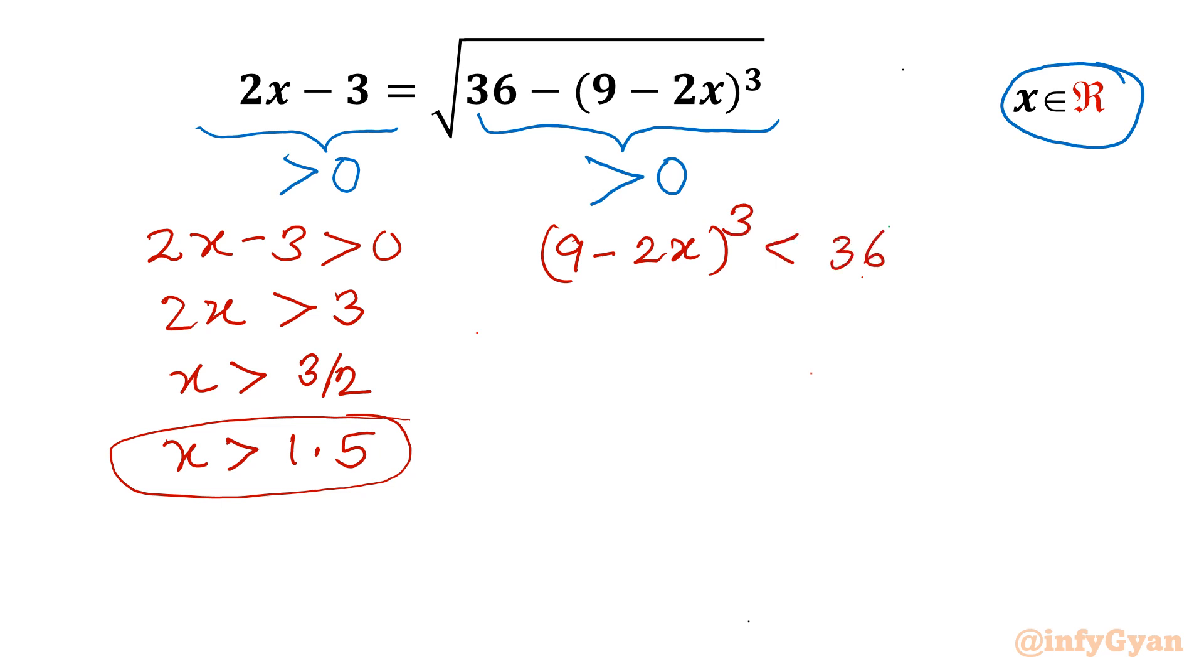Once it is greater than 36, then square root of negative number, complex solution will come. Consider cube root both sides, so 9 minus 2x should be less than cube root of 36, and this approximate value is 3.3.